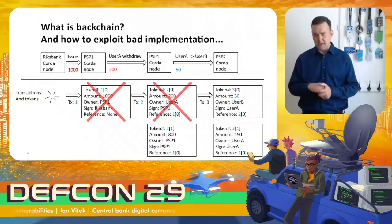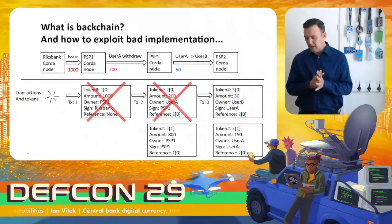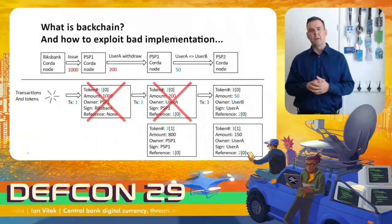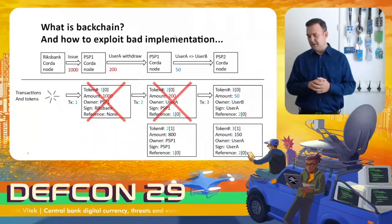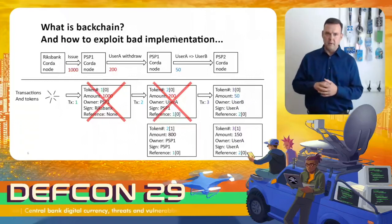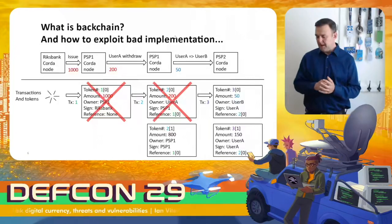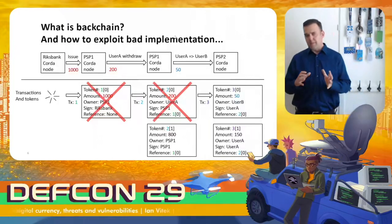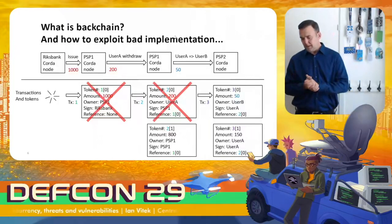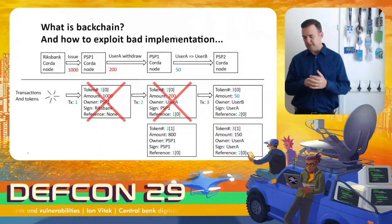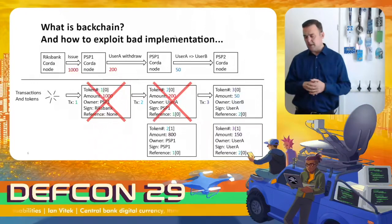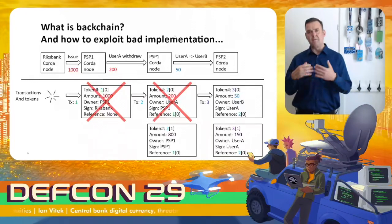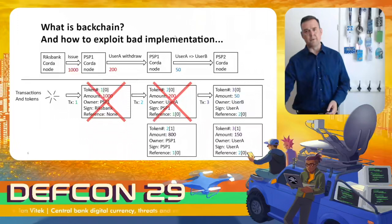The prototype for phase one was built on Corda 4.5 and the corresponding Token SDK. Most of the information is very simplified, of course, and the vulnerabilities in the design have also been verified in Corda 4.7.